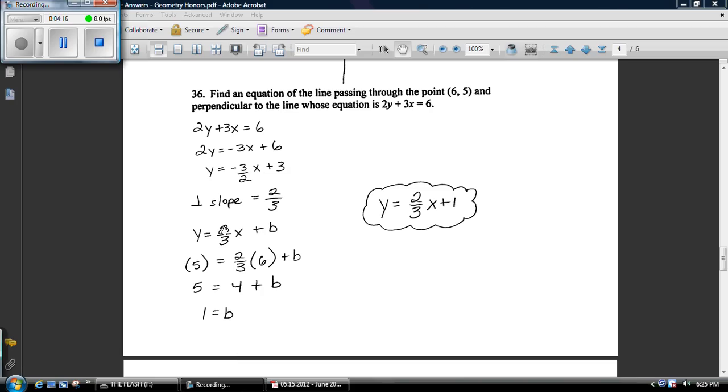The slope of a line perpendicular to it has a negative reciprocal slope. So its slope is going to be two-thirds, the negative flip of this one. So then here's the general equation of a line. I subbed in this slope. Now I've got to find b.